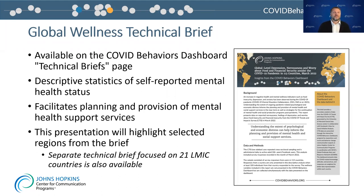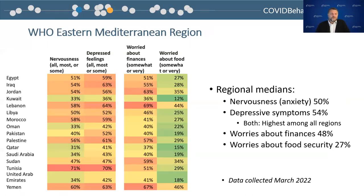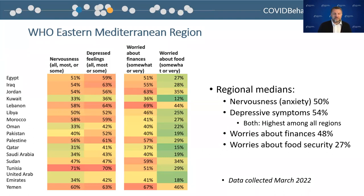So let's dive into a couple of those tables. These data reflect all participants and not only men. This is a chart from the WHO Eastern Mediterranean region. You can see each of the variables: nervousness or anxiety, depressive feelings, worried about finances, and worried about food, and the response options captured. In the WHO Eastern Mediterranean region, the highest rates of nervousness, anxiety, and depression were reported among all six regions. More than 50% of the respondents in the Eastern Mediterranean region reported symptoms of anxiety and depression.